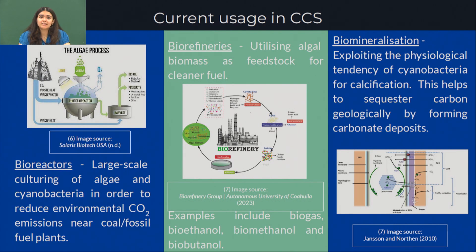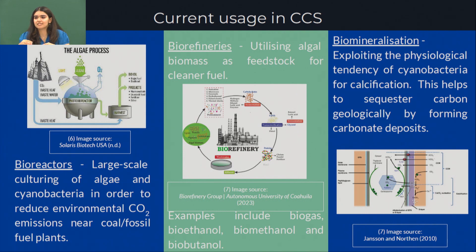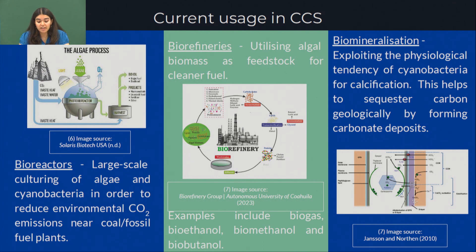Currently, microalgae and cyanobacteria are being used at a global level on a very large scale in three main ways. The first is by using bioreactors — essentially large-scale algal cultures grown in vessels in the presence of light, with flue gas used as a carbon substrate. Flue gas is a common term denoting all exhaust gases that exit any power plant. When provided to algae as a substrate, they grow and sequester the carbon. However, photobioreactors are affected by many factors such as temperature, pH, the strain of microalgae culture used, the type of bioreactor, and any invading species present.